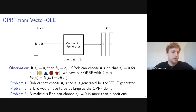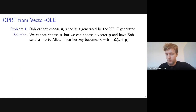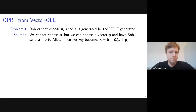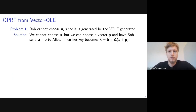We now show how to fix each of these issues. For the first problem — Bob not being able to choose a — we use a standard construction that reduces a chosen-input OLE correlation to a pseudorandom one. If Bob cannot choose a but can choose a different vector p, he can send p plus a to Alice, where a acts as a one-time pad masking p. Alice's key then becomes b plus delta times (a plus p), which still satisfies the Vector OLE correlation, giving correctness while allowing Bob to choose his vector.